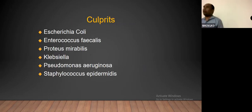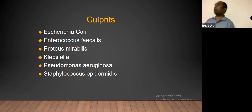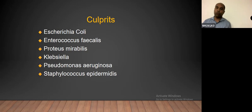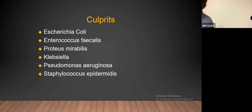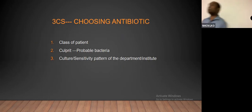The culprits we know about are classically E. coli, which constitutes nearly 70% of all UTIs. Then we have the Enterococcus group, which is becoming more and more common and is a very resistant organism. Then of course you have Proteus, Klebsiella, Pseudomonas, Staph epidermidis, and others.